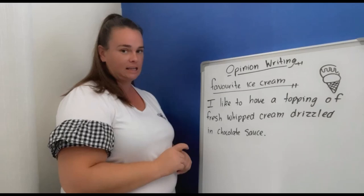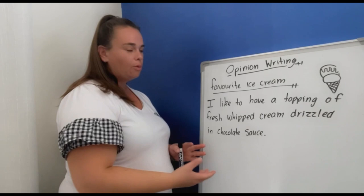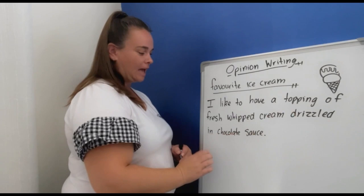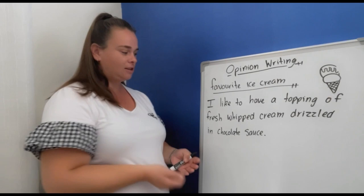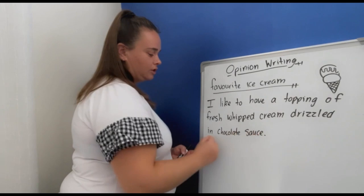Remember to write it in a complete sentence. Not just whipped cream or chocolate sauce or hundreds and thousands — we've got to write it as a sentence. You've got a nice describing word there. You've got to explain how you like to have it. I like to have a topping of fresh whipped cream drizzled in chocolate sauce.